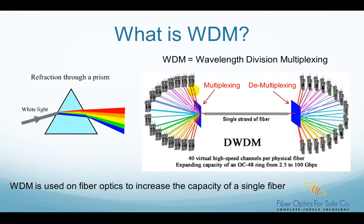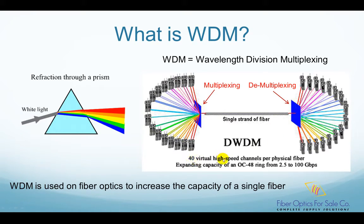As shown in the picture, in a WDM system many different colored lights are combined by a WDM multiplexing device and put into a single strand of fiber. Each color is called a channel. On the receiving side, each color is separated into its own channel by a WDM demultiplexing device. A single fiber's capacity is increased by 40 times with a 40-channel WDM.